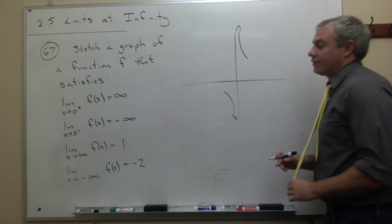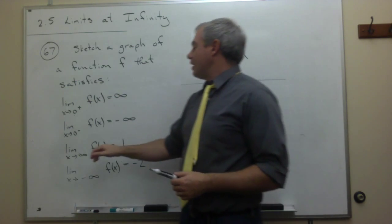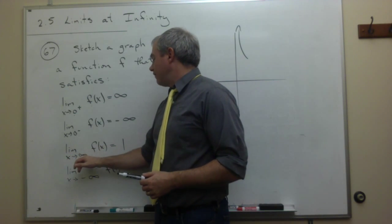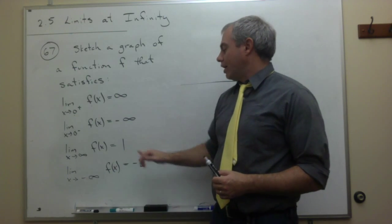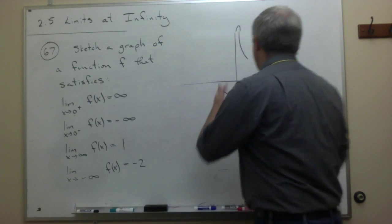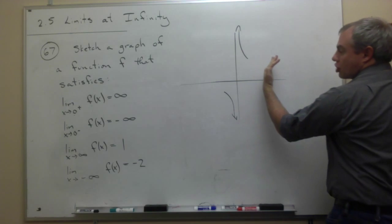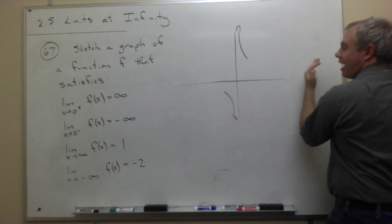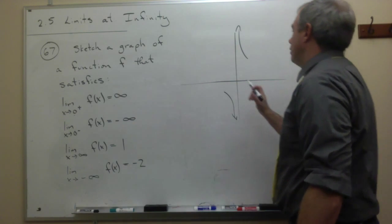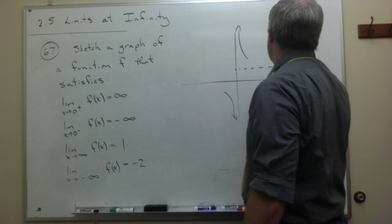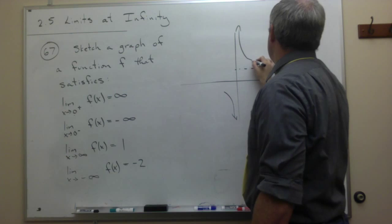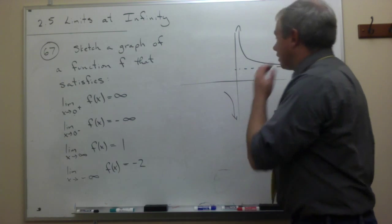What else are we given? That the limit as x goes to infinity of f of x is 1. So as I go, x values go towards infinity, I'm getting close to 1. So let me just say, okay, here's 1, and as I go out to infinity, I'm getting close to 1.